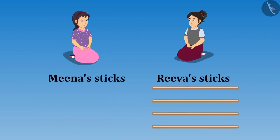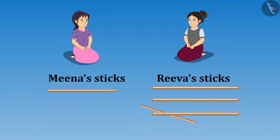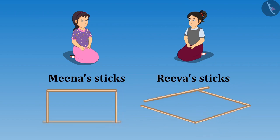Absolutely right Riva. Come on, we will form a figure with four sticks of equal length. So here are your four sticks and here are my four sticks. Then Meena and Riva formed figures with their sticks and showed it to each other.